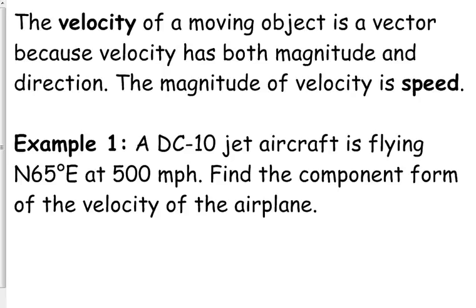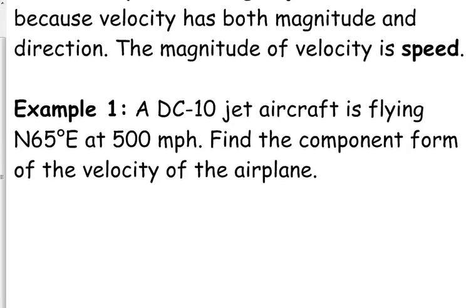So when you're going down the road, your speed isn't taking into consideration whether you're moving north or south or east or west or forwards or backwards. It's just your speed. Velocity gets more specific about it. So let's find the component form of the velocity of this DC-10 jet aircraft. It is flying north 65 degrees east at 500 miles per hour. So you definitely need to draw these.